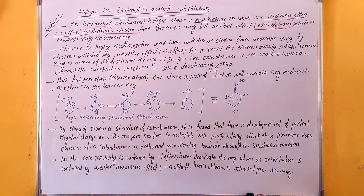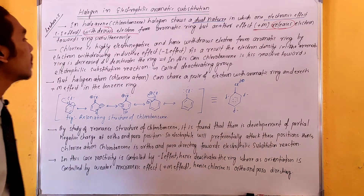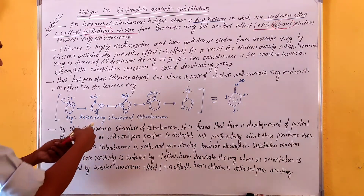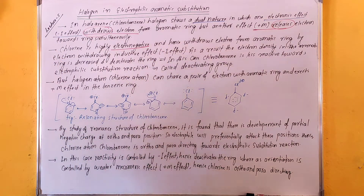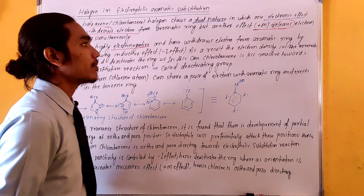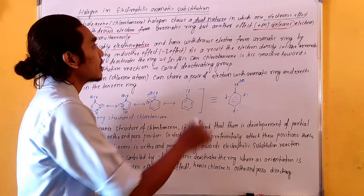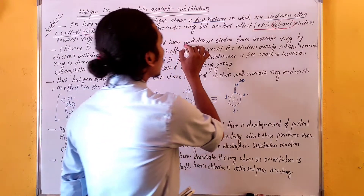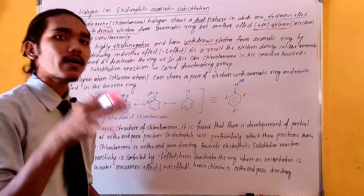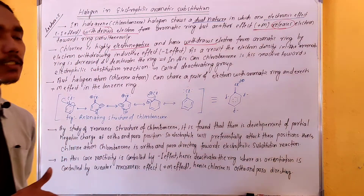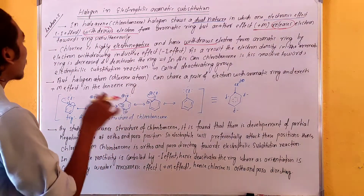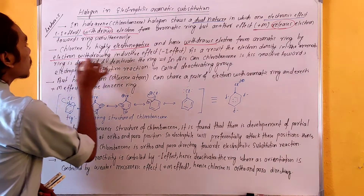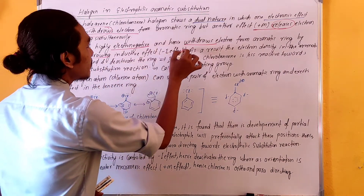Chlorine is a highly electronegative halogen. Because of its high electronegativity, it withdraws electrons from the aromatic ring by the electron-withdrawing inductive effect — that is the minus I effect.